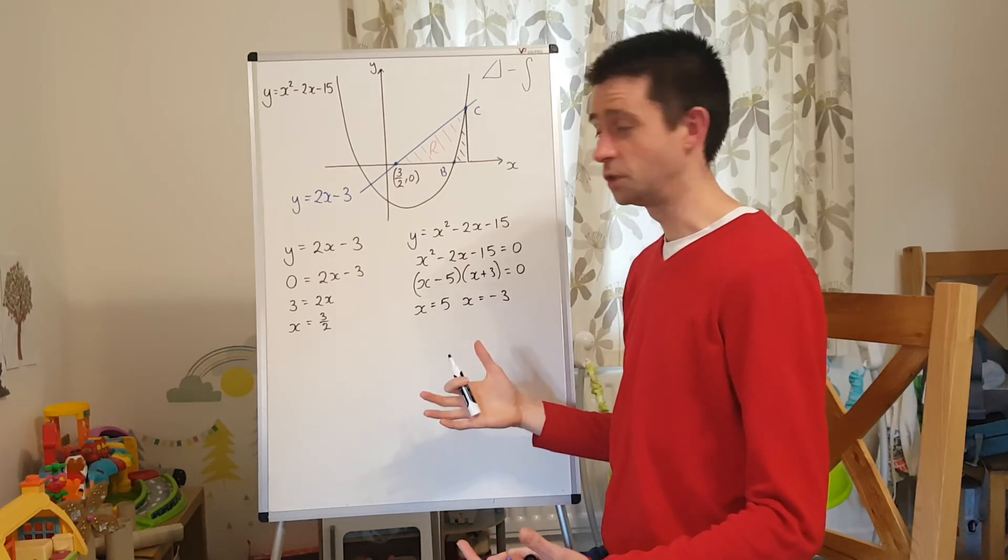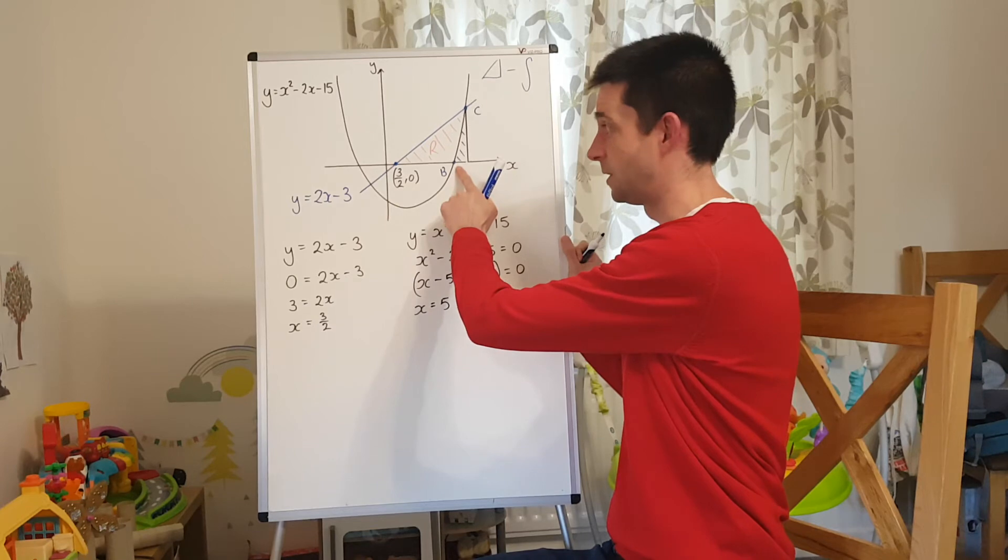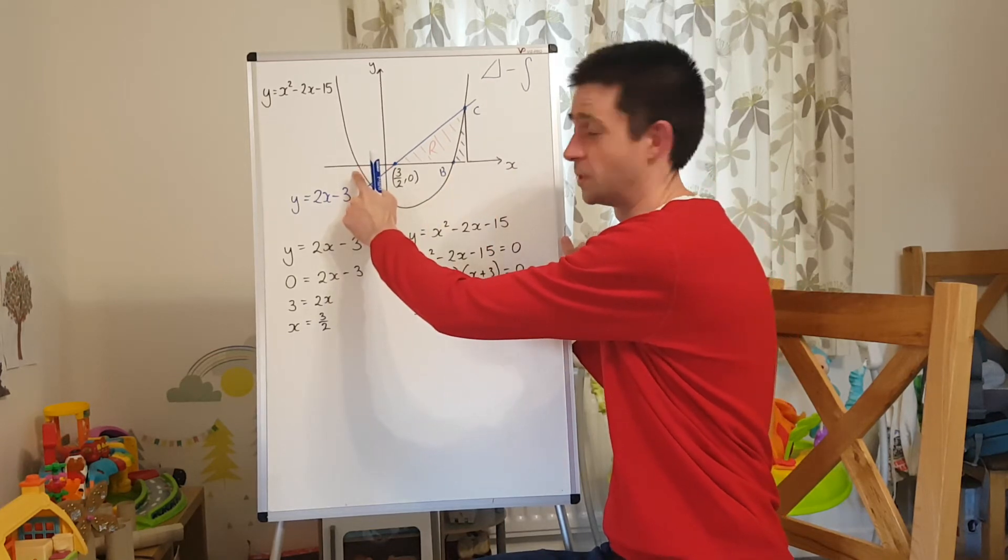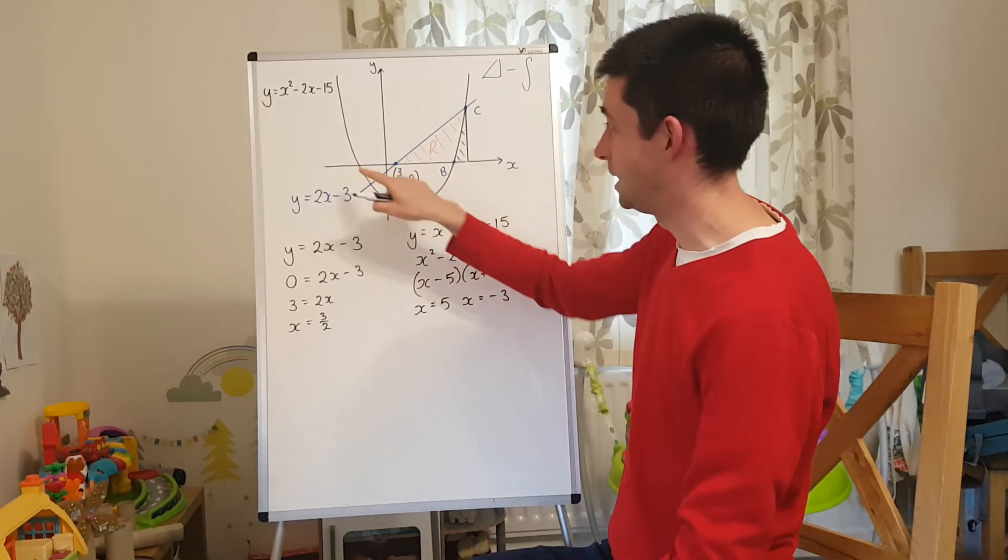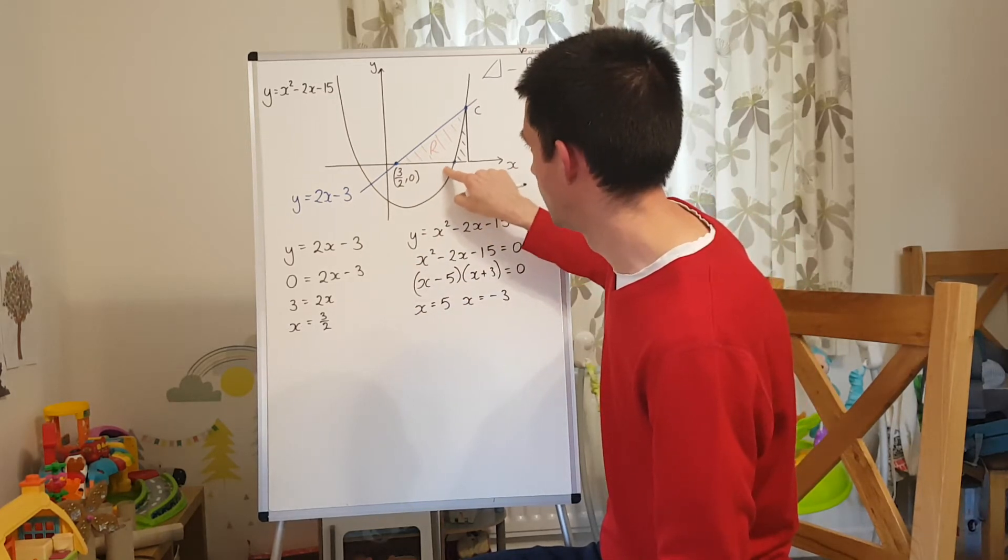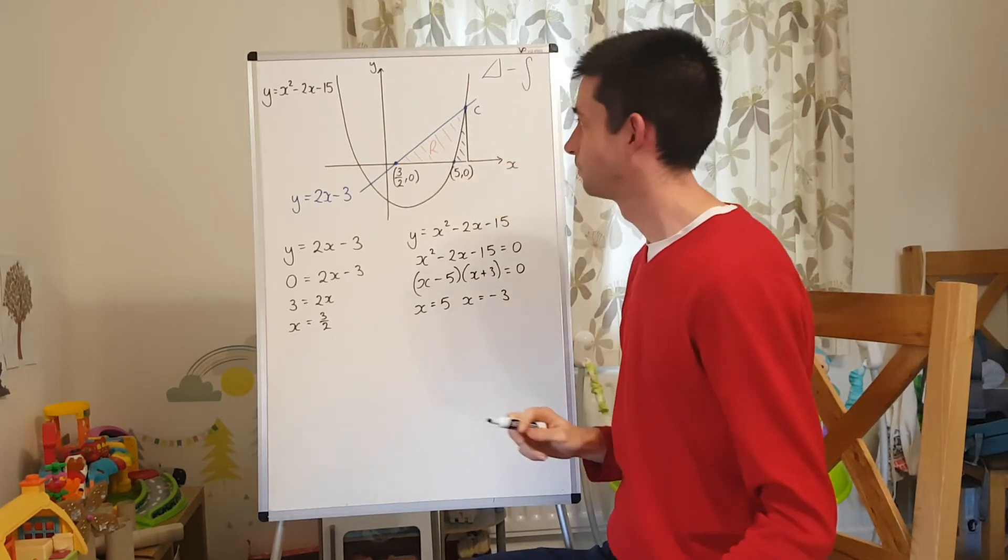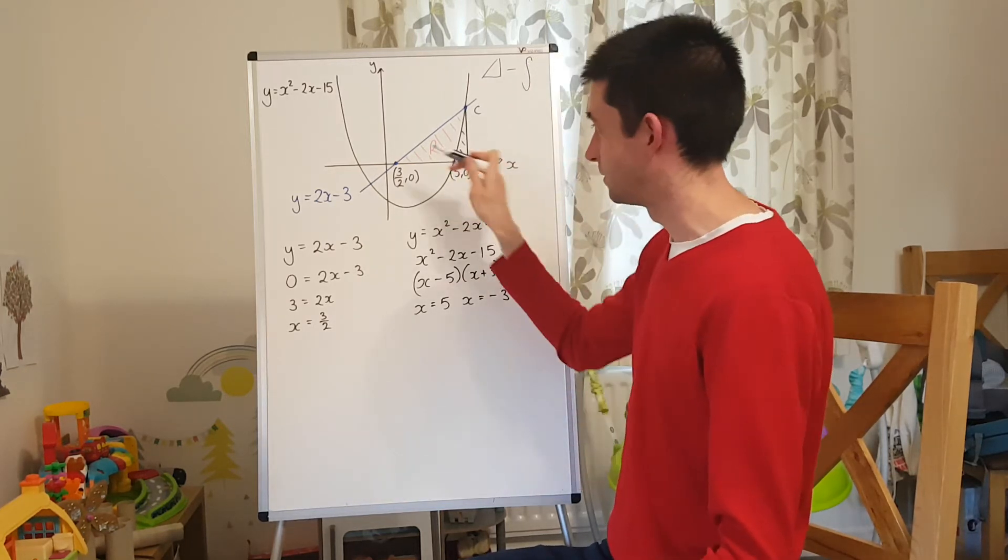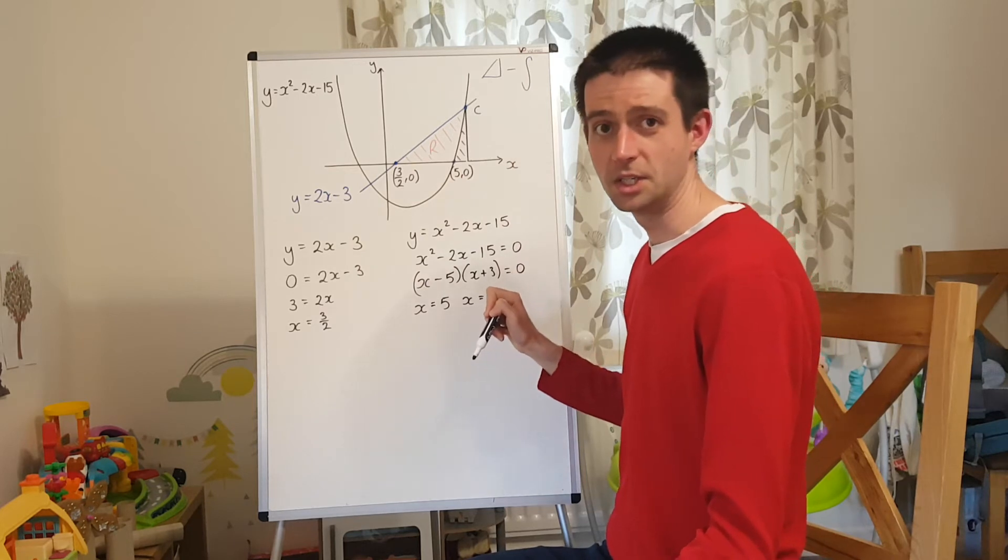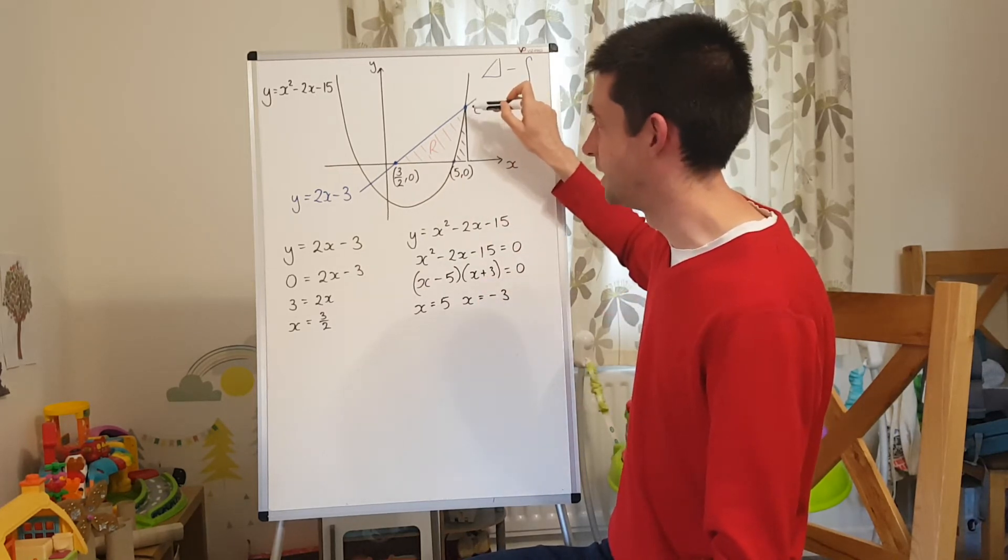I've got two answers because there's two roots, 5 and negative 3. This one is obviously 5. Negative 3 is this one over here. I'm not going to worry about labeling that one over there because I don't need it to solve my problem. So I'm just going to label that as the point 5, 0, there. So I've found two of the three points that I'm going to need to solve this question.